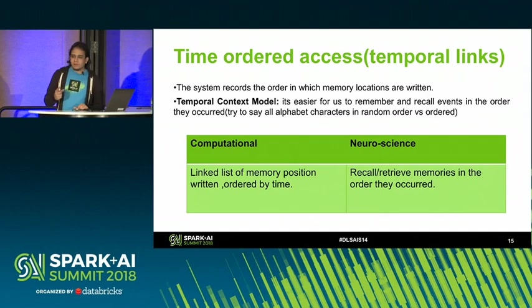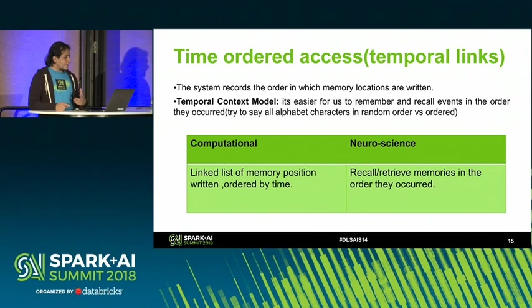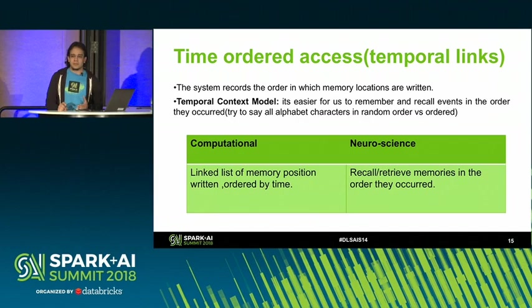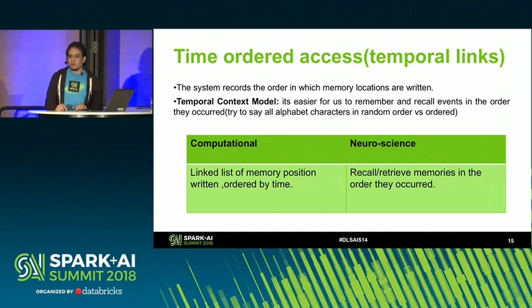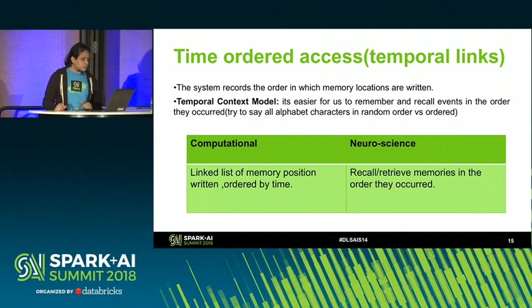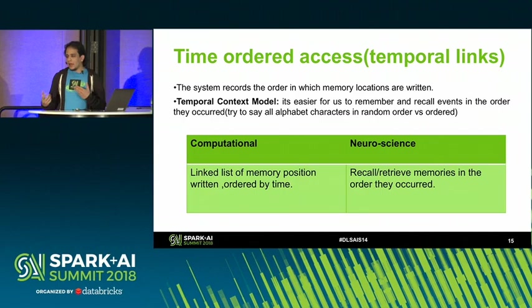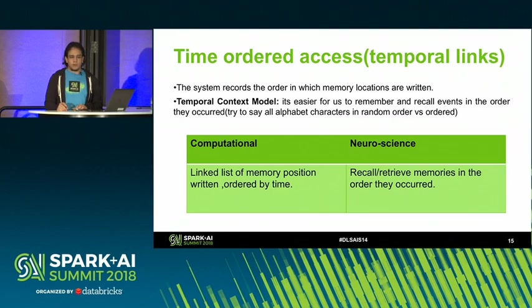The DNC has other attention mechanisms as well. The second is a temporal attention mechanism, which is based on a neuroscience model called the Temporal Context Model. The neuroscience idea is that it's easier for us to remember things in the order they happen — try saying the alphabet in a random order versus in order, and you'll see it's much easier in order. Computationally, this is implemented as a linked list of memory locations. When we write to memory, we record the memory position in a linked list, and we can retrieve memories in the order they were written, or retrieve them backwards.